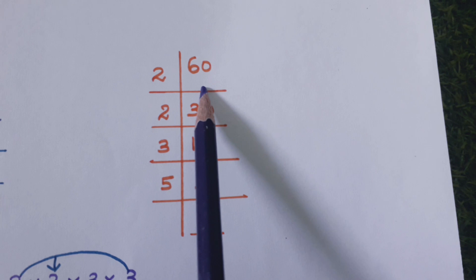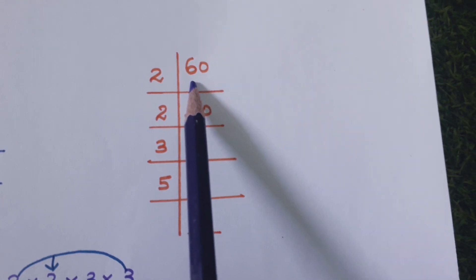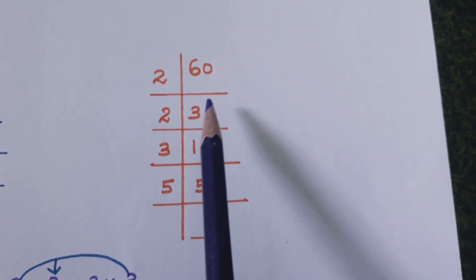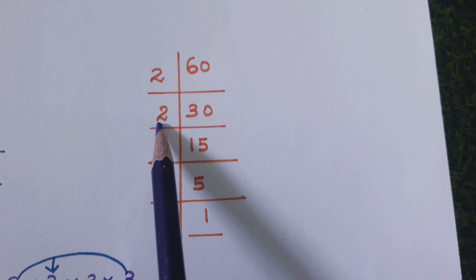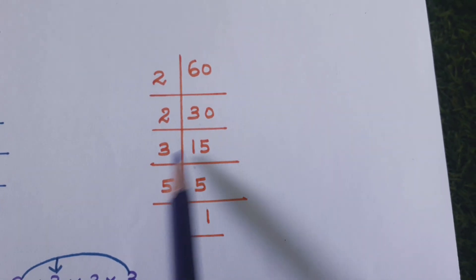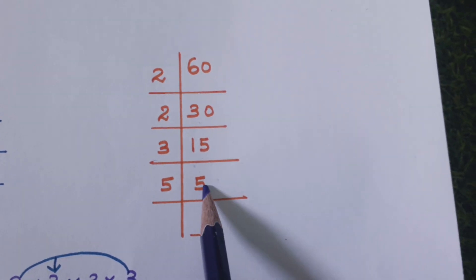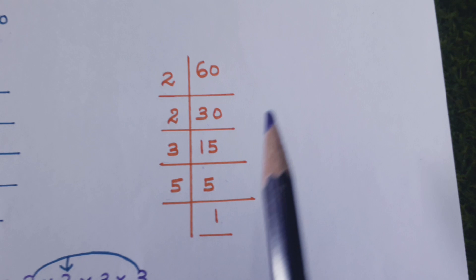The second number is 60. 60 divided by 2 is 30. 30 divided by 2 is 15. 15 divided by 3 is 5. 5 divided by 5 is 1.